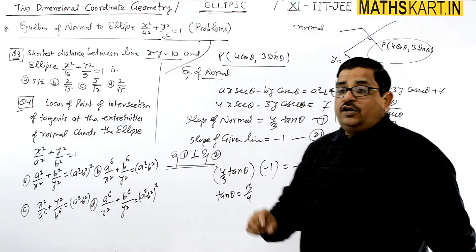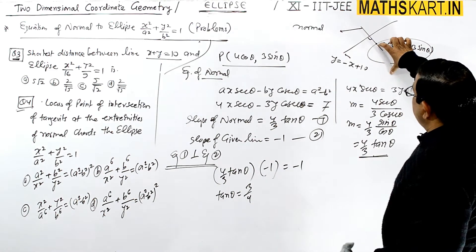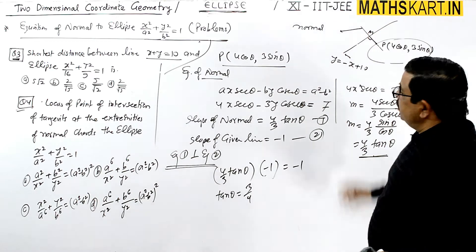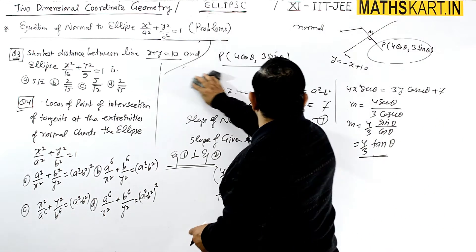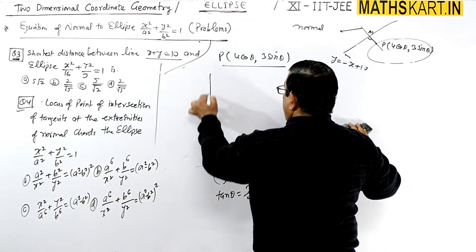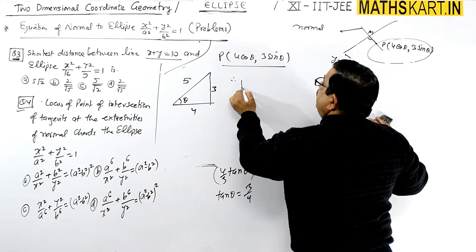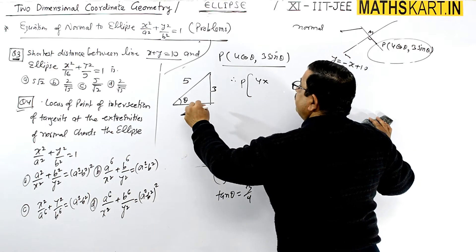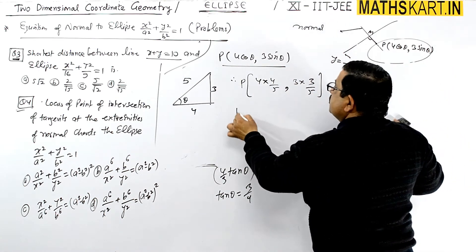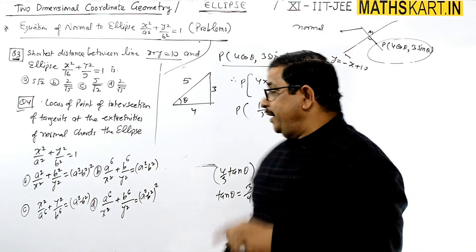Once we have tanθ = 3/4, we can find cosθ and sinθ. From the triangle: opposite = 3, adjacent = 4, hypotenuse = 5. So cosθ = 4/5 and sinθ = 3/5. Therefore point P = (4 × 4/5, 3 × 3/5) = (16/5, 9/5).